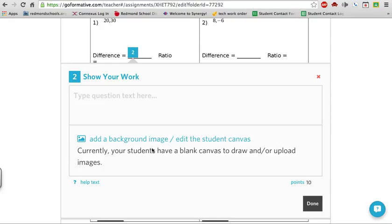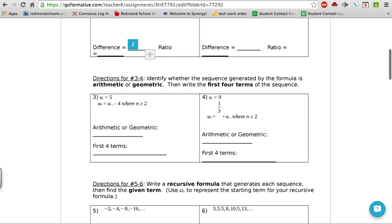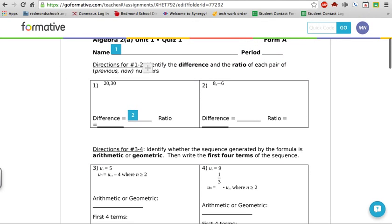And you can adjust your points. So we're going to leave this one out of five. I'm just making stuff up. I'm going to hit done. And again, it minimizes for you. And the kids are just going to see this number two and they know they're going to click on it and be able to put in a question there.